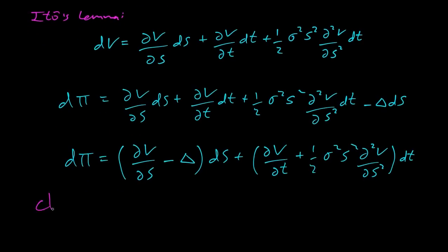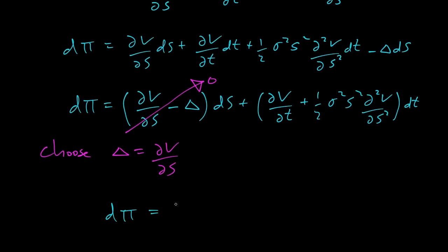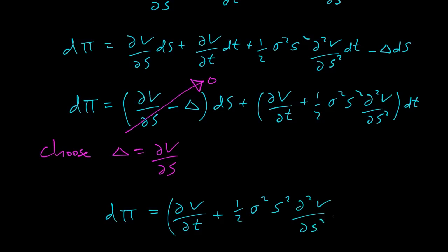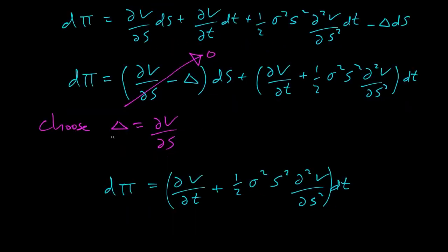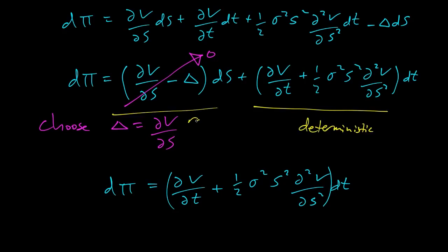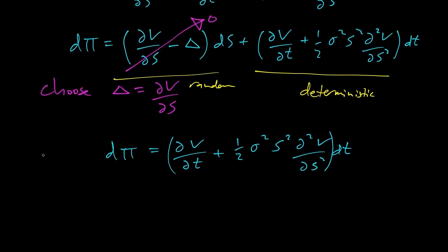We choose delta equal to partial of V with respect to S. This choice makes the stochastic term go to zero. We get d-pi equal to partial of V with respect to t plus one-half sigma squared S squared, second partial with respect to S, times dt. Our delta is eliminating all the stochastic part of the change in value of our portfolio — we're setting the random part equal to zero.